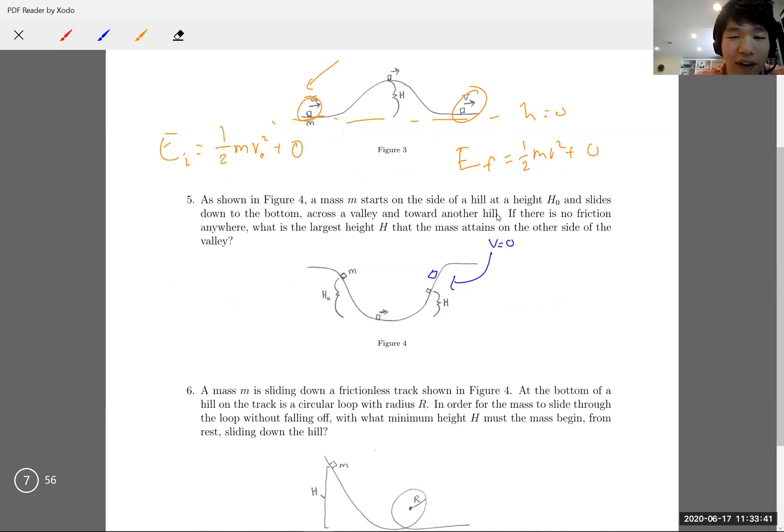Initially, we have Ei equals one over two m v squared, but that's zero since the velocity is zero, plus m g h naught, where h naught is the initial height. We define this bottom as h equals zero. Then we look at the final state where the velocity equals zero once again.